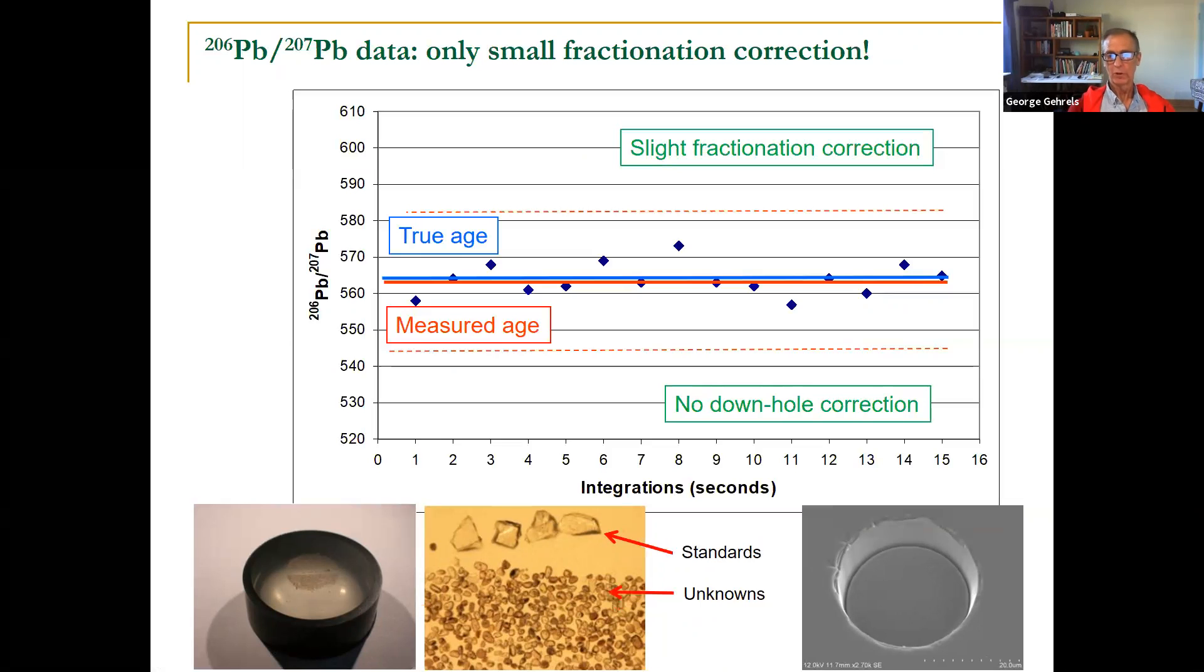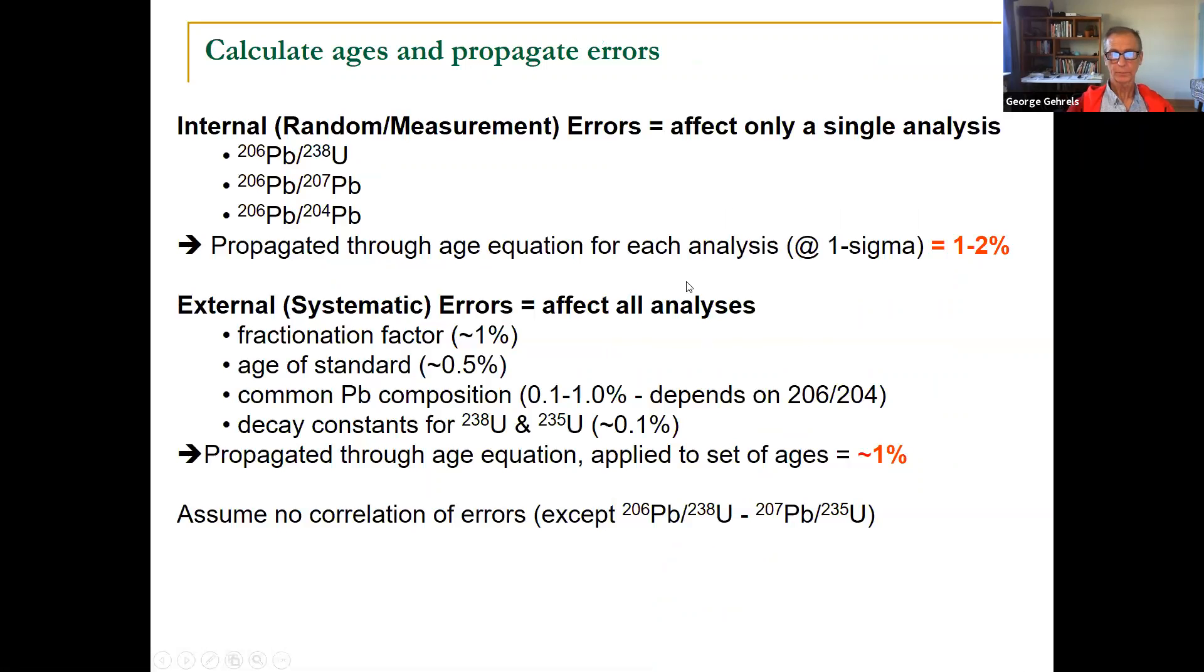Here's the good news. Mass spectrometers are really good at measuring 206, 207 because they're both lead. They behave similarly. And so the true age is actually very similar to the measured age. You might be only off by a tenth of a percent. You would still do a very small correction here, but this is a minor mass bias correction. And you generally do not get a down hole fractionation because six and seven are behaving similarly as you drill down into that zircon crystal.